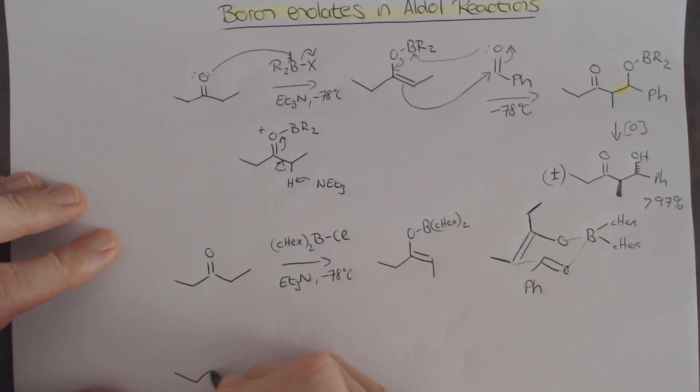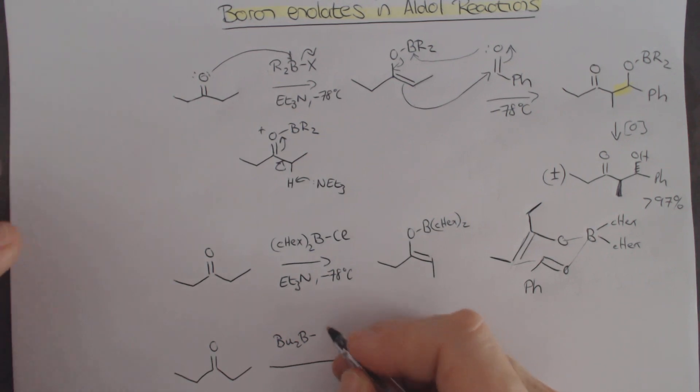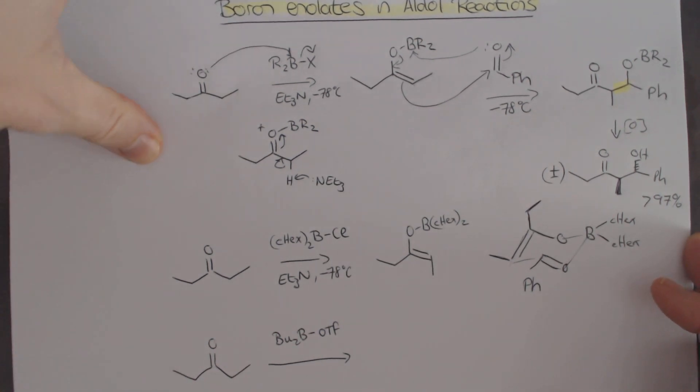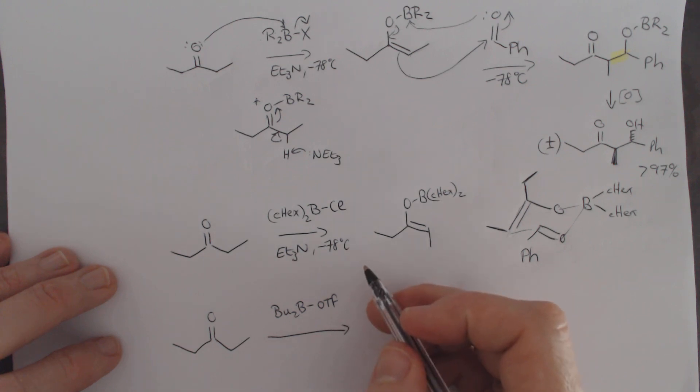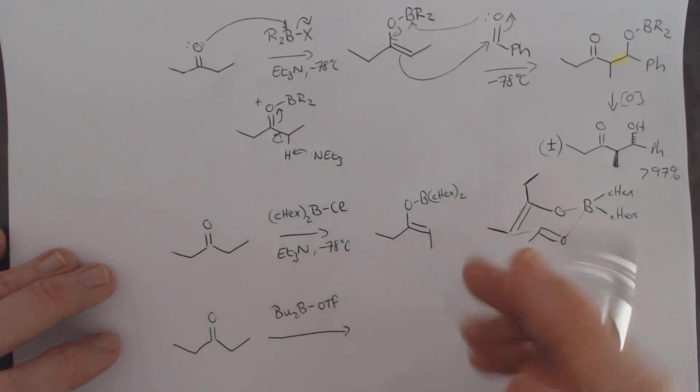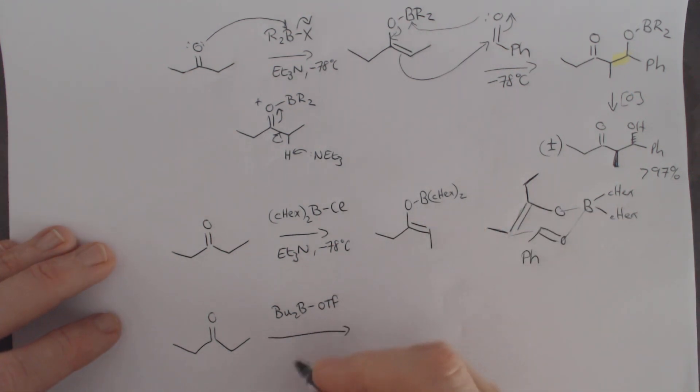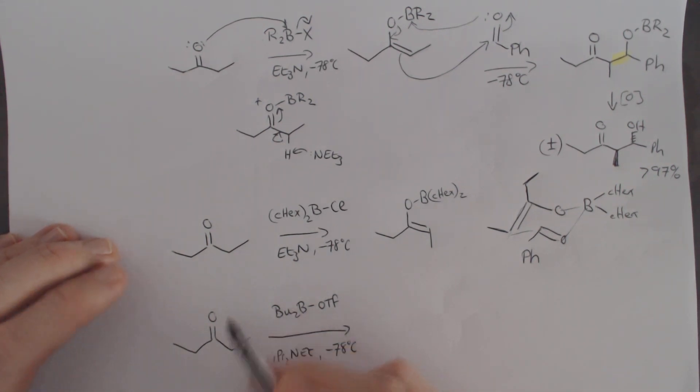The other boron enolate that we need to learn about is just dibutyl boron. And now this is one little kind of trick that's over here, is that actually the better leaving group is triflate, not the chloride. That has to do with its sensitivity to the particular base that gets used. If you use the chloride and triethylamine, it actually starts going a little bit more towards trans. There's a complicated transition state that you'd have to look at. But here, if we use this plus the amine, typically is a Hunig's base, also again at minus 78 degrees Celsius. Simplistically, these butyl groups are not sterically bulky.